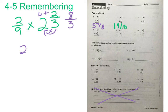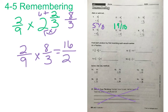Now we have 2 ninths times 8 thirds. You can go ahead now and multiply straight across. 2 times 8 equals 16, and 9 times 3 equals 27. So your answer is going to be 16 over 27.